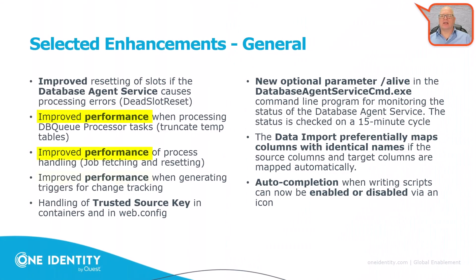Version 9.1.1 is also a service pack that significantly improves performance. This is the result of close collaboration between R&D and customers, including support cases resolved with enterprise customers. Performance was improved across many areas of the Identity Manager — including the job service, SQL calculation engine, and even the web — and wherever you see the wording 'performance improvements,' that is what is meant.